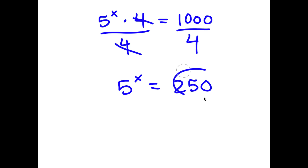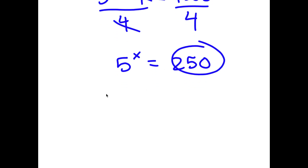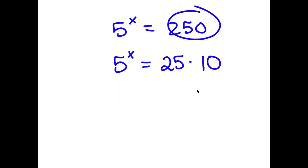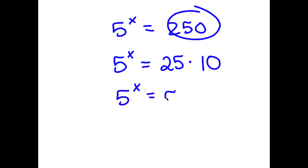Now, 250 — I can rewrite this as 25 times 10. So I have 5 to the power of x is equal to 25 times 10. And 25 is the same thing as 5 squared, so now I have 5 to the power of x is equal to 5 squared times 10.